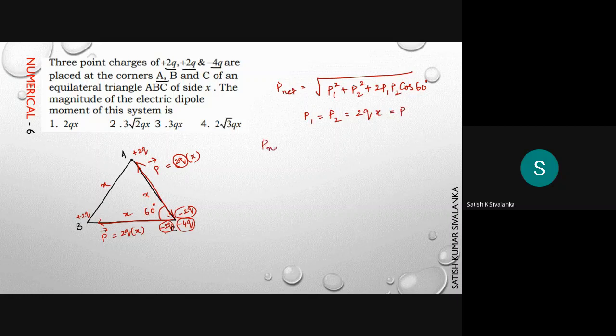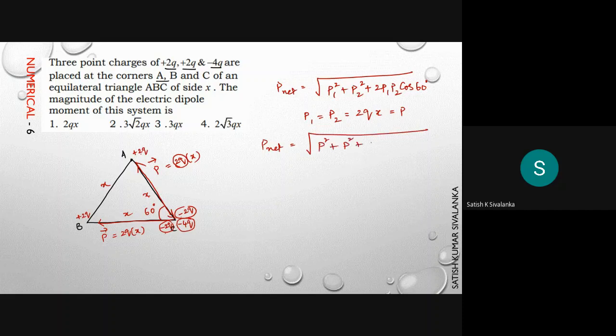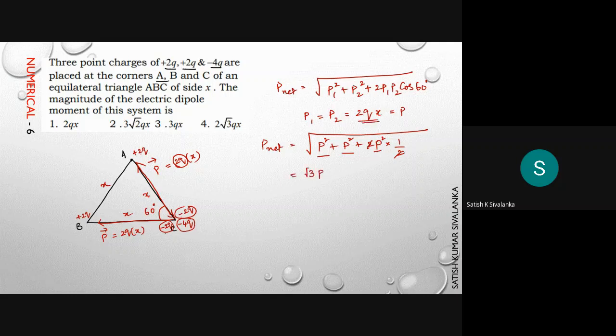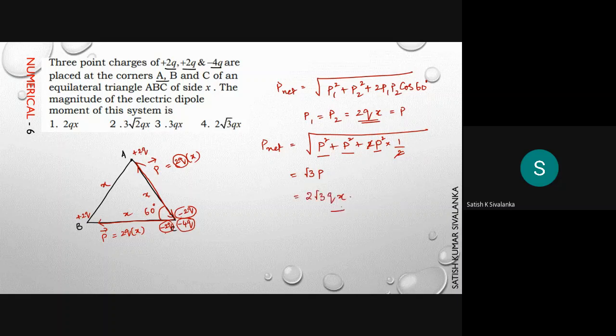So you will find the net dipole moment as root of p² + p² + 2p²cos60°. Since cos60° is 1/2, the 2 gets cancelled, giving p² + p² + p² which is √3p, and p equals 2qx. You will get 2√3 qx.